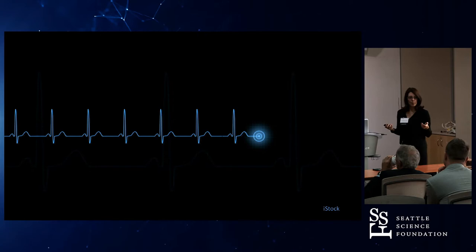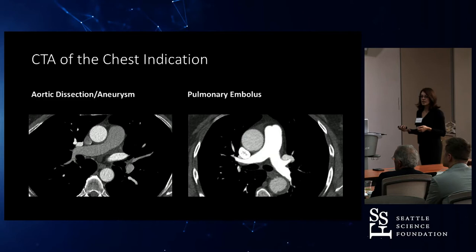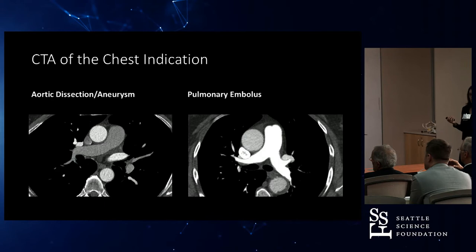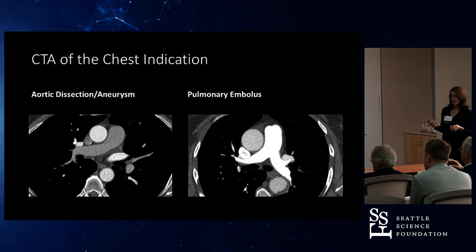So when you order a CTA of the chest, you have to tell us what you're looking for. Are you looking for a PE or are you looking for an aortic pathology? We can also do both, but the CT tech will target the area and opacify what we're looking for.